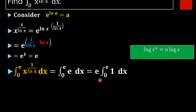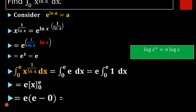The value of this integral is x evaluated from 0 to e. Applying the limits: e into (e minus 0) equals e times e, which is e squared. So our final result is e squared.